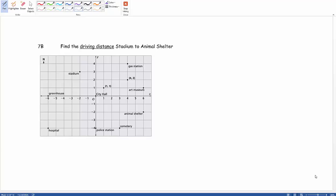Here we are at our chapter 1 target for problem 7b. We're asked to find the driving distance from the stadium to the animal shelter.